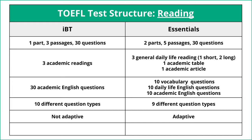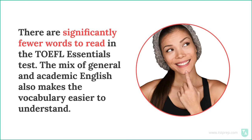The big difference between the IBT and the Essentials is that there are a lot fewer words to read on the Essentials test. In the Essentials test, you only have to read 600 words. On the IBT, you have to read up to 2,100 words — each passage is 700 words, so the passages are really long. The passages are short and sweet in the Essentials. The mix of general and academic English also makes the vocabulary easier to understand, so it's a lot less stressful.